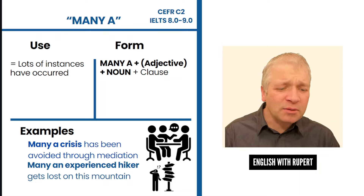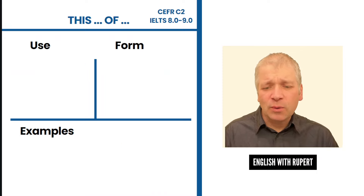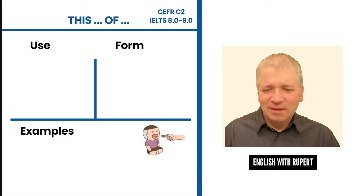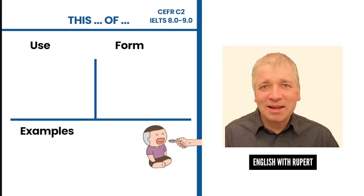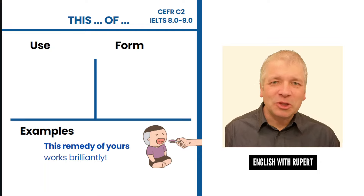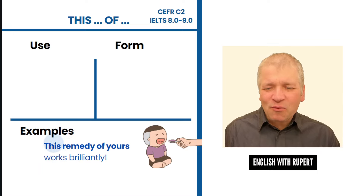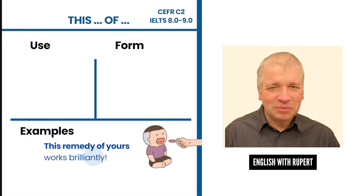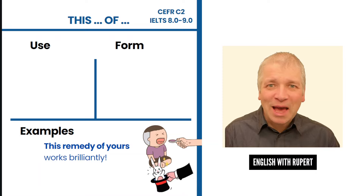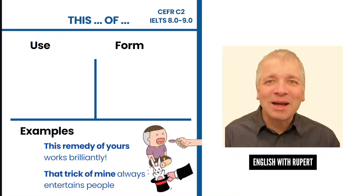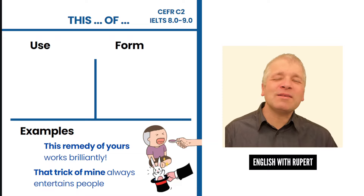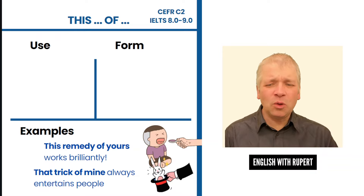Let's look at another advanced determiner phrase: 'this something of something.' Here's a child taking some medicine — a remedy is like a medicine but sometimes one you make yourself. The sentence is: 'This remedy of yours works brilliantly.' Another example uses a magic show context, where the magician says: 'That trick of mine always entertains people.'